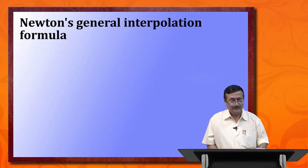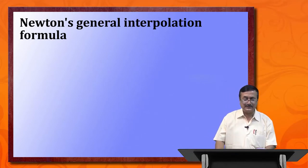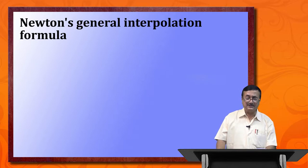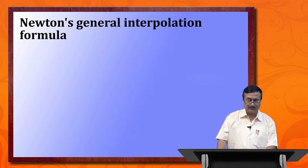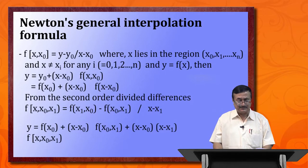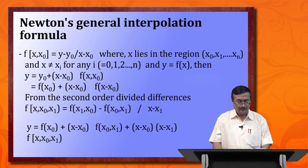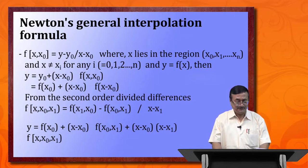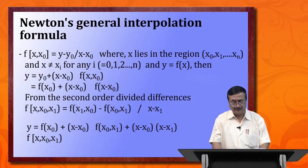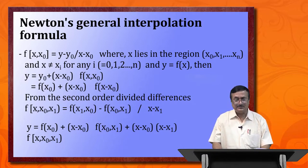Newton's divided difference formula, also called Newton's general interpolation formula, can be derived by writing f of x, x0 as y minus y0 divided by x minus x0. From the calculations, we get Newton's divided difference formula as y equals f(x0) plus x minus x0 into f(x0, x1) plus x minus x0 into x minus x1 into f(x0, x1, x2), with the last term being the remainder term.